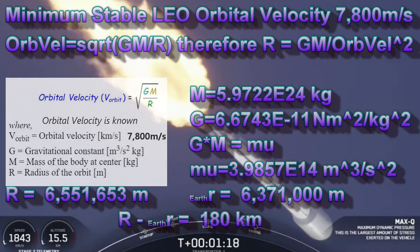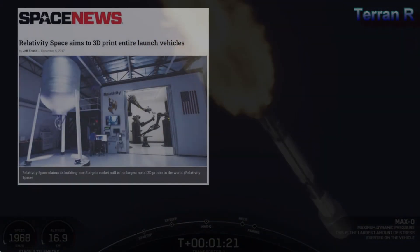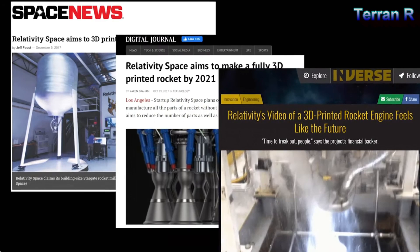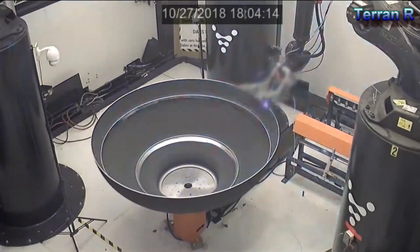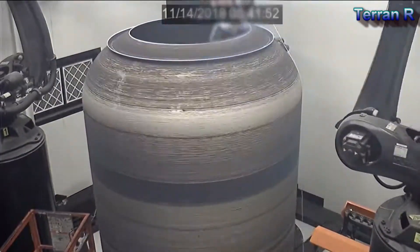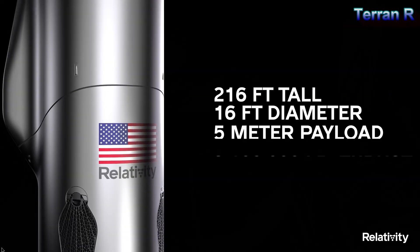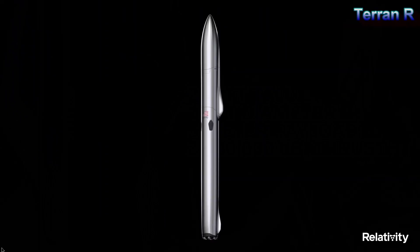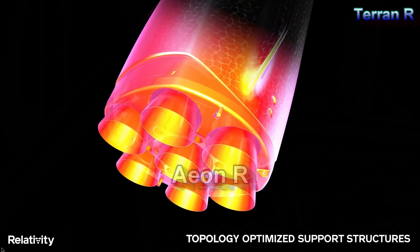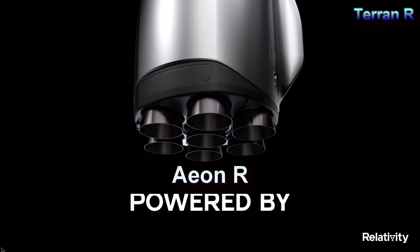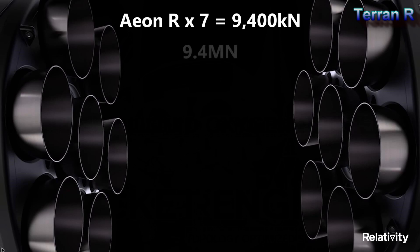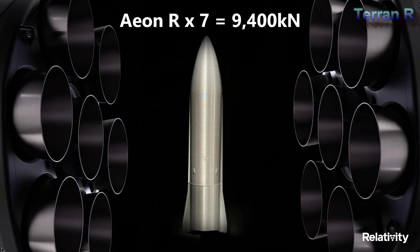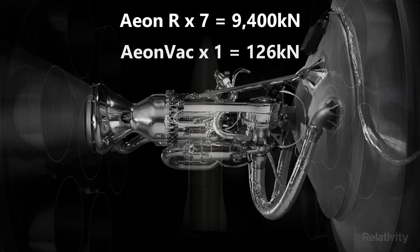But what if we don't know the delta V of our rocket? What if we are looking at a methane-burning rocket, like the Terran R, and we have incomplete data? This is planned to be a fully reusable rocket system made by Relativity Space, and it will be the world's first almost completely 3D-printed rocket. It is 66 meters tall and 5.5 meters in diameter. The first stage is powered by seven Aeon R engines, which produce a maximum combined thrust of 9,400 kilonewtons. The second stage will have one Aeon Vac engine producing 126 kilonewtons.